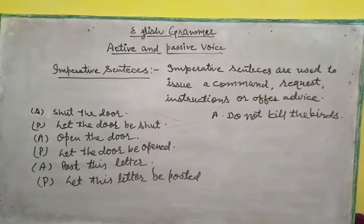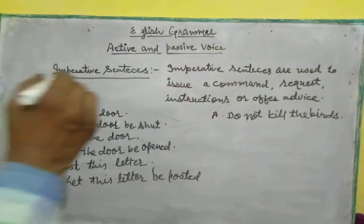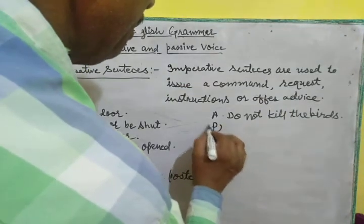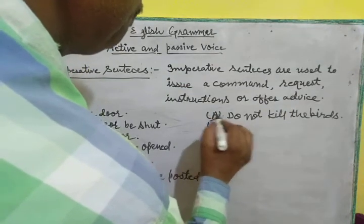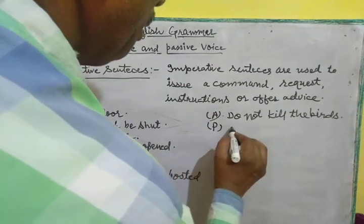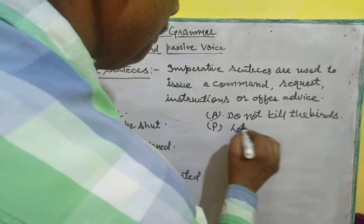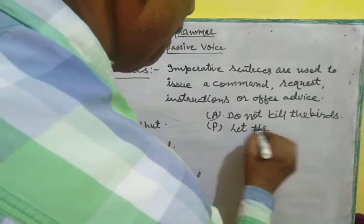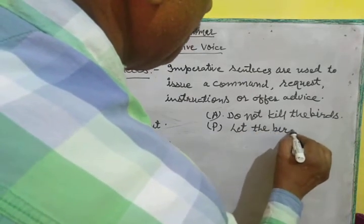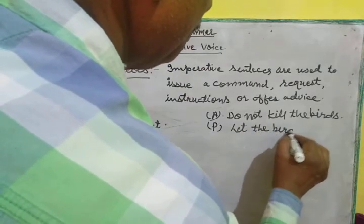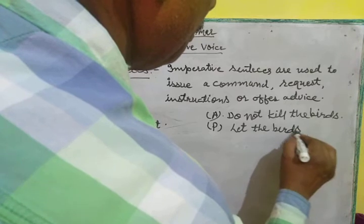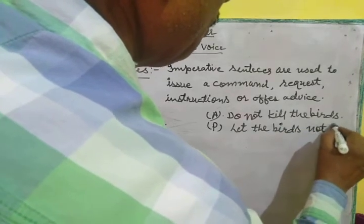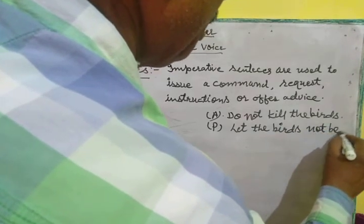Active — Do not kill the bird. Passive — Let the bird not be killed.